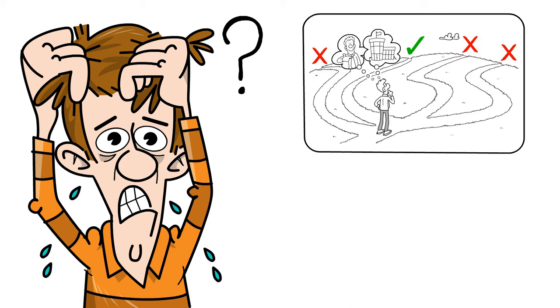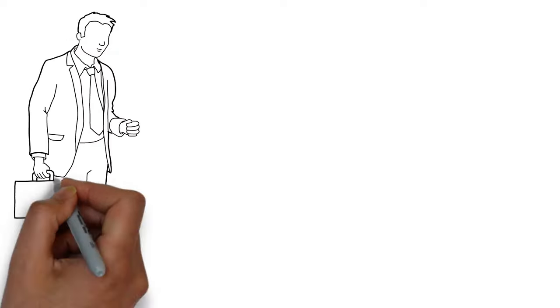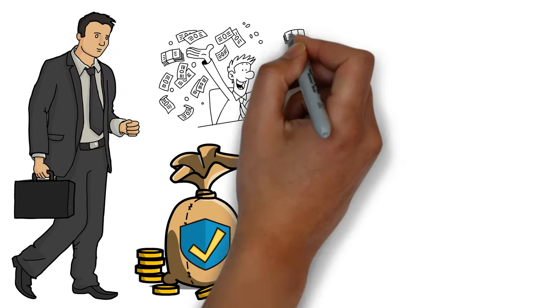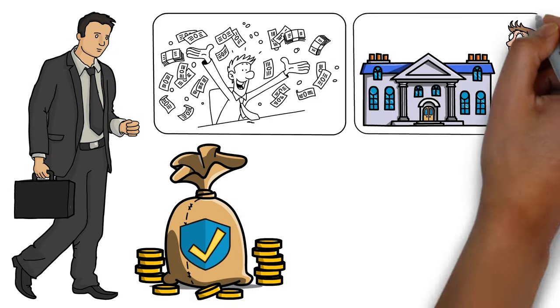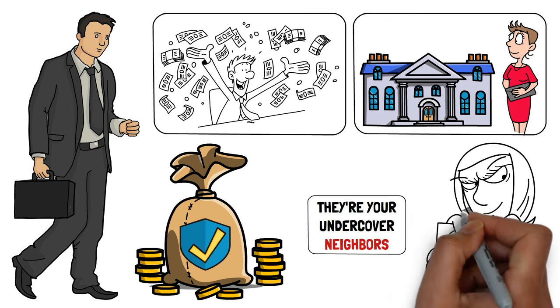True affluence isn't about flashing four wheels. It's about stacking up smart choices. Most real millionaires prefer to keep their wealth a secret. They aren't splurging on designer labels or sprawling mansions. They're your undercover neighbors blending in with everyday attire and modest homes.